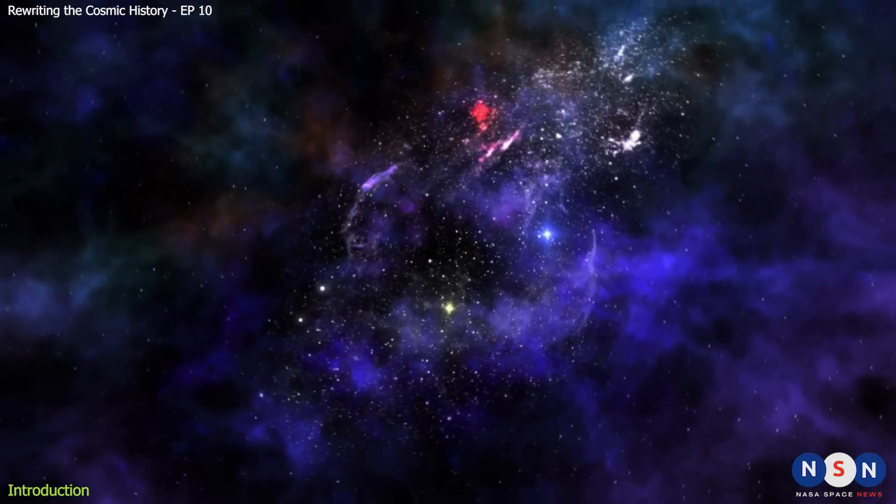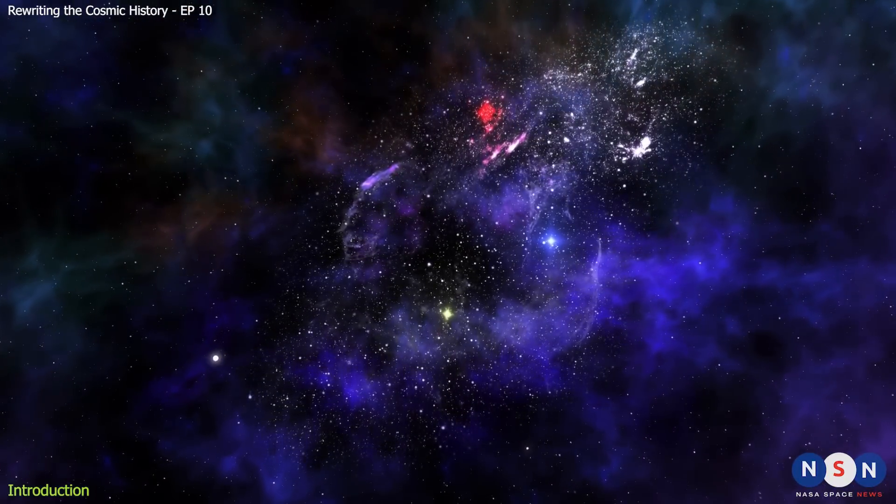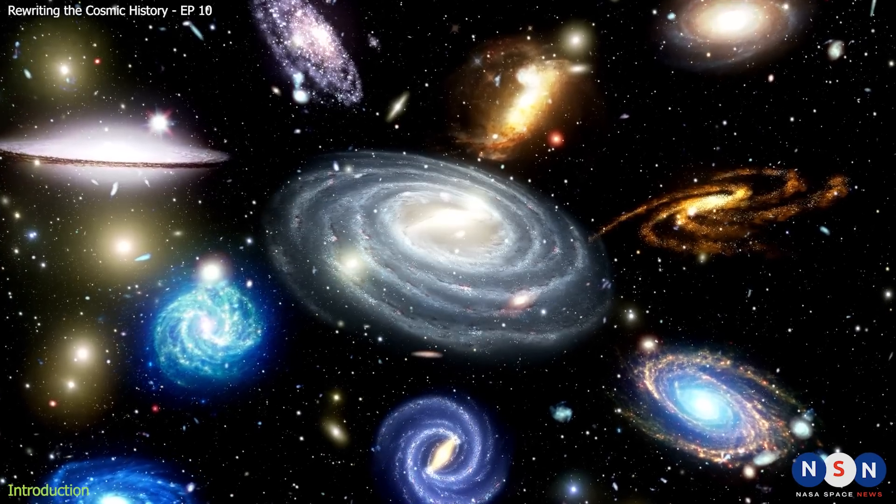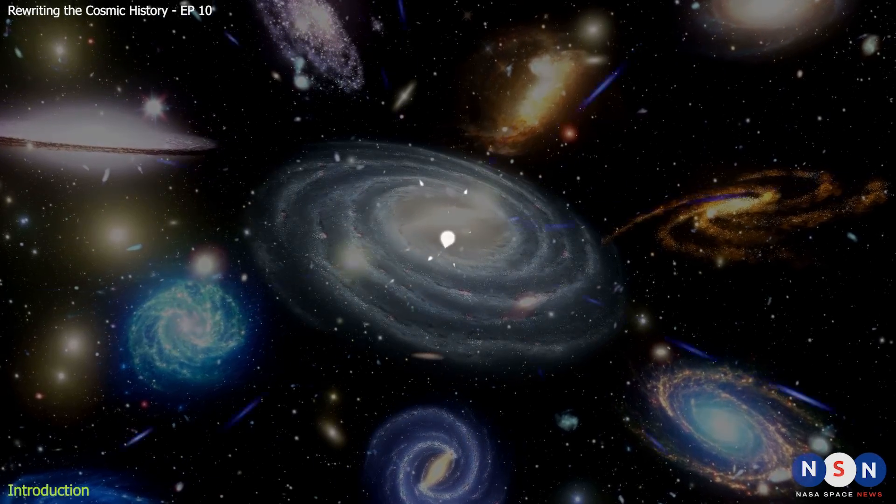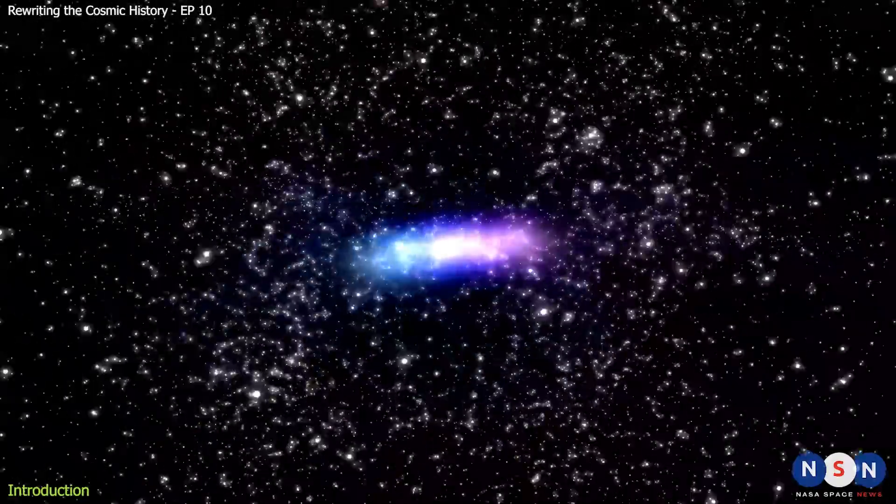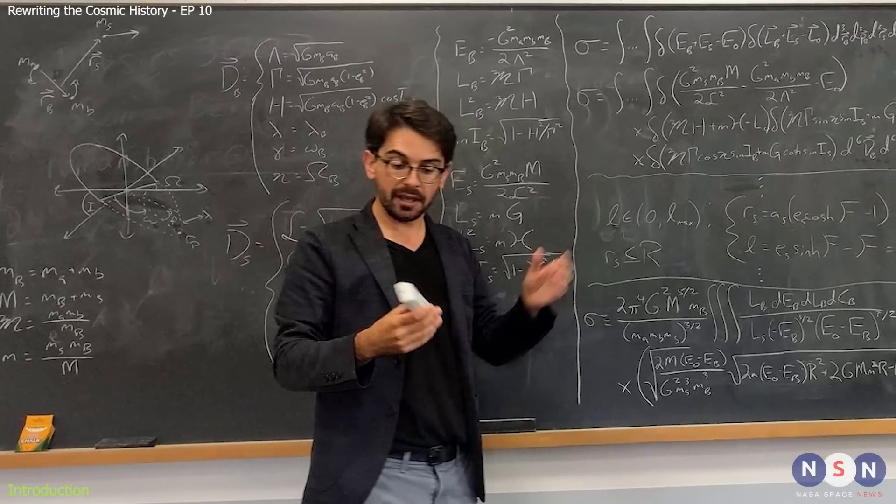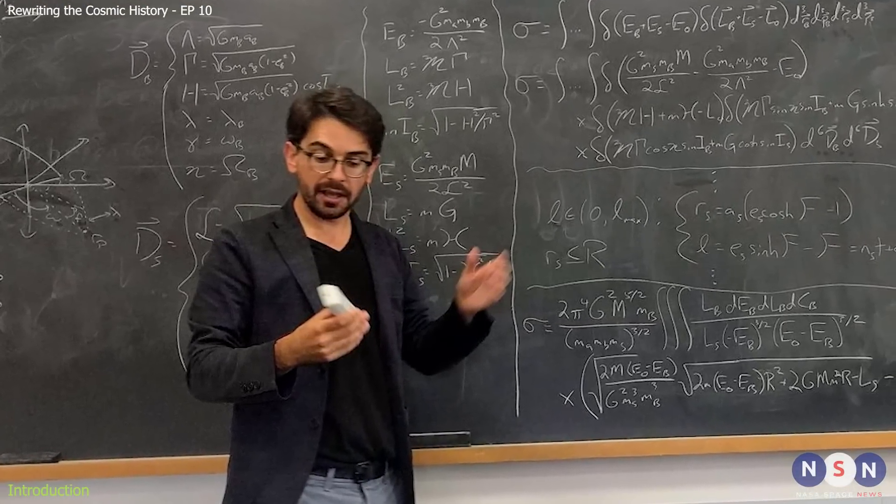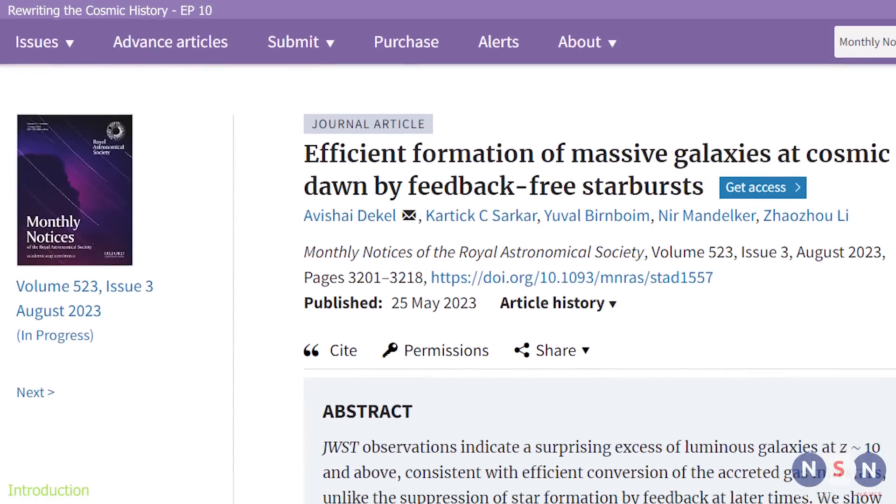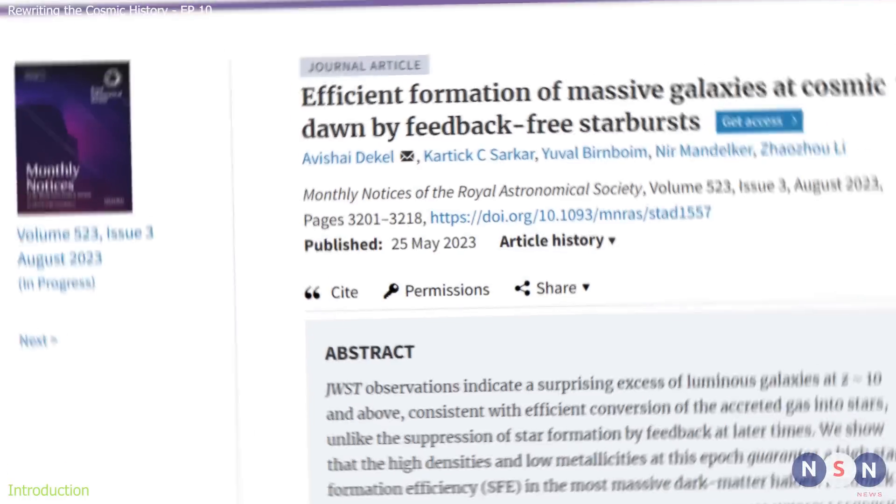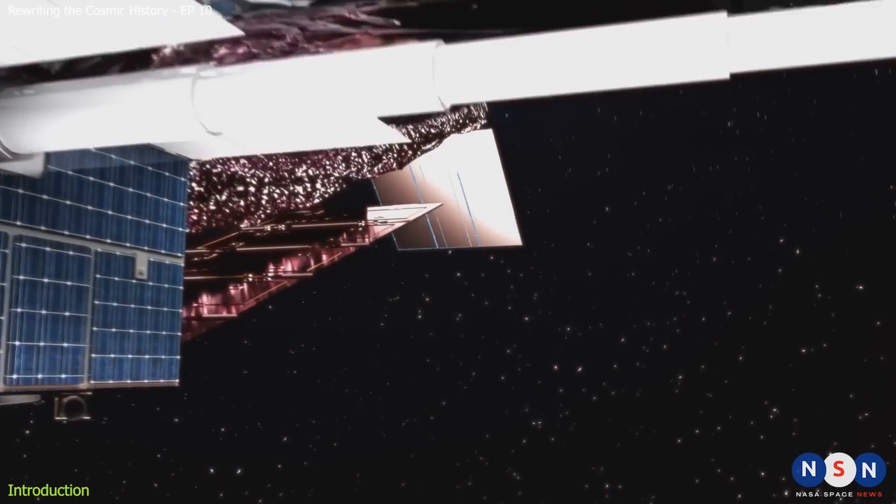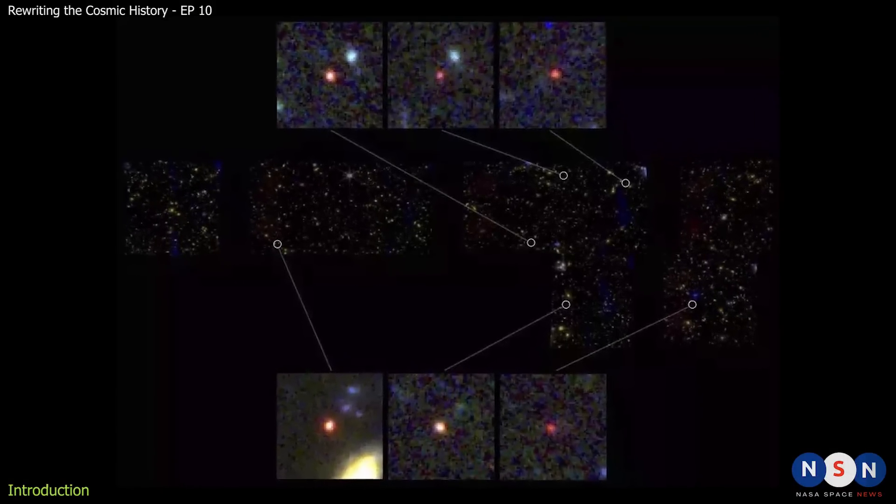But what if there is another way to solve this mystery? What if there is a new theoretical model that can explain how these early massive galaxies formed naturally without changing our basic understanding of the universe? Well, that's exactly what a team of astrophysicists from the Hebrew University of Jerusalem has proposed in a recent study published in Monthly Notices of the Royal Astronomical Society. In this video we will explore their model and see how it can solve the puzzle of the early massive galaxies.